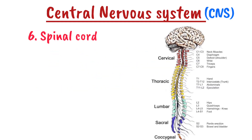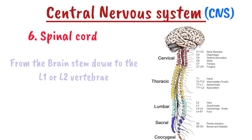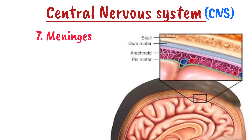Number six is the spinal cord. The spinal cord extends from the brain stem down to the L1 or L2 vertebrae and is divided into five segments: cervical, thoracic, lumbar, sacral, and coccygeal. It transmits signals between the brain and the body and also helps in controlling reflex actions.